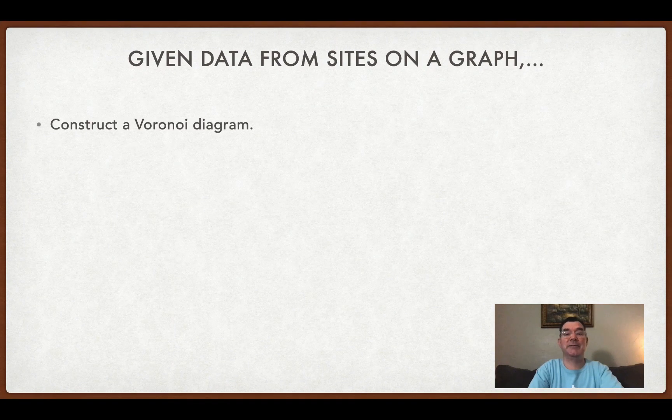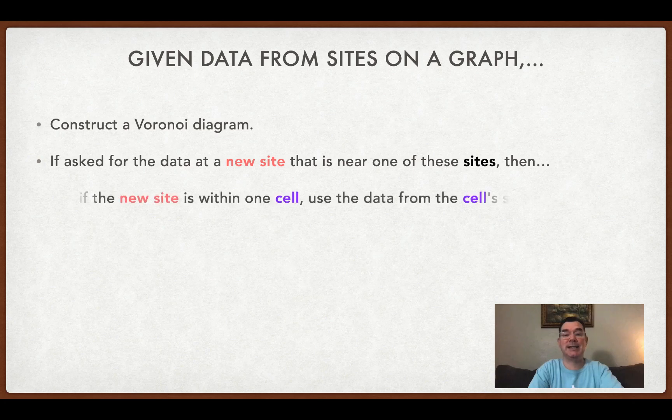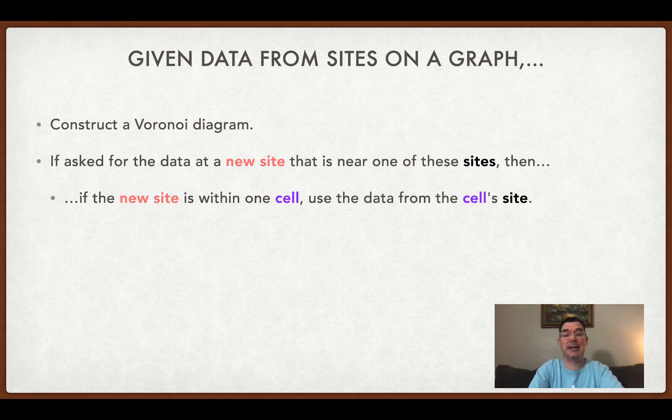Let's say that we have some given data from sites on an existing Voronoi diagram. If you're asked for new data at a new site that is near one of these sites, then here's what you do. If the new site is within one cell, use the data from that cell's site.